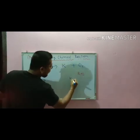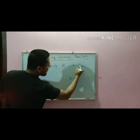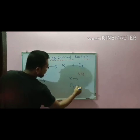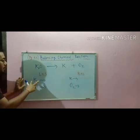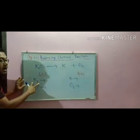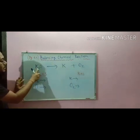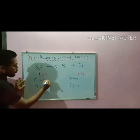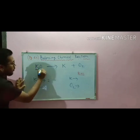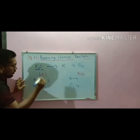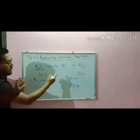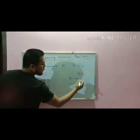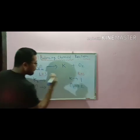On the RHS: K₄ for potassium and O for oxygen. In the potassium on the LHS, how many atoms are there? Two. In oxygen, only one. On the RHS: potassium one, oxygen two.